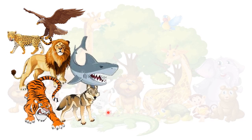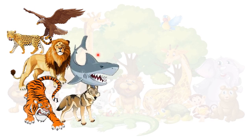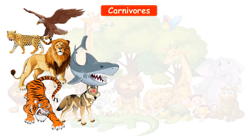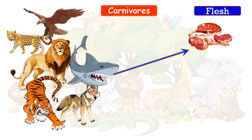Now children, identify this group of animals. This is a shark — a sea animal. Wolf, tiger, lion, cheetah. And this is an eagle — it is a bird. They all eat flesh, that is why they are known as carnivorous animals. Animals or birds that eat flesh are known as carnivorous animals.